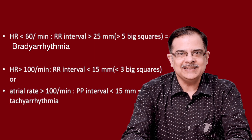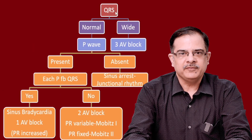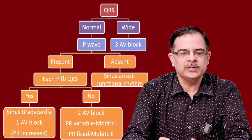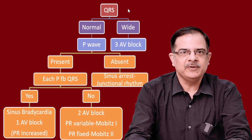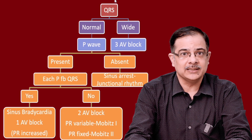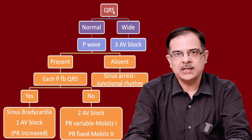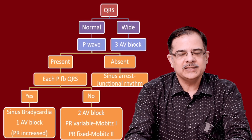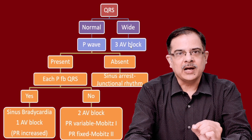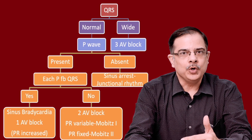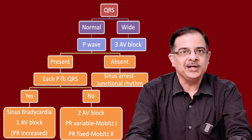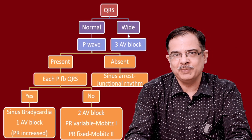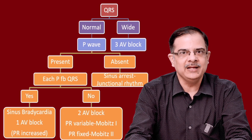The first step in diagnosing bradyarrhythmia or tachyarrhythmia using this simple flowchart is to assess the QRS complex. For bradyarrhythmia with heart rate less than 60, look at the QRS complex first. If the QRS complex is wide — meaning 3 mm or more in width — it is a case of third degree AV block. Though the essential criteria is no relation between QRS and P wave, for medical students a simpler rule is: wide QRS always indicates third degree AV block.